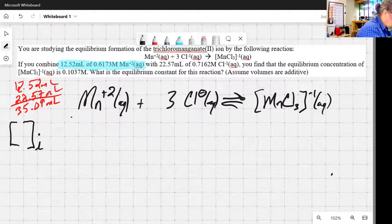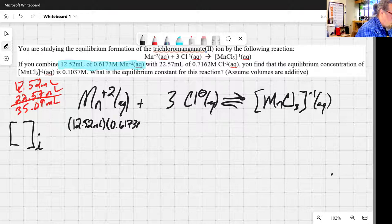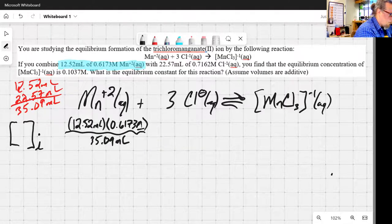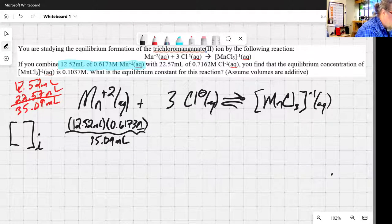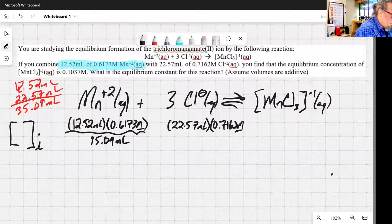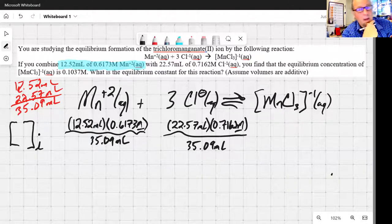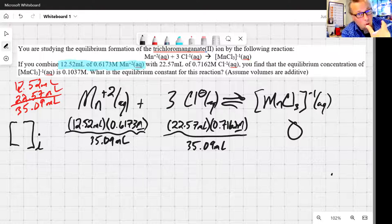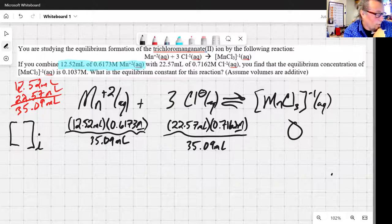So let's go back in and figure out our initial concentrations for everything. So manganese, I've got 12.52 milliliters times 0.6173 molar, all over 35.09 milliliters. For chloride, 22.57 milliliters times 0.7162 molar over 35.09 milliliters. And what about that product? Well, if we're doing the reaction as it's stated, initially, we have no product. So we've got a zero there. Zeros are really nice when we're doing equilibrium problems, because they're zero. We can somewhat ignore them.